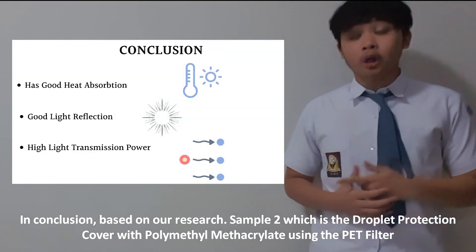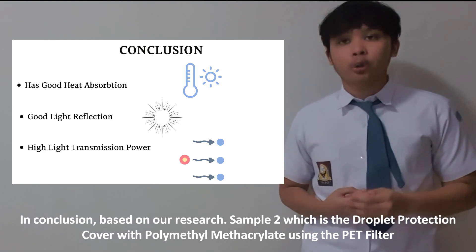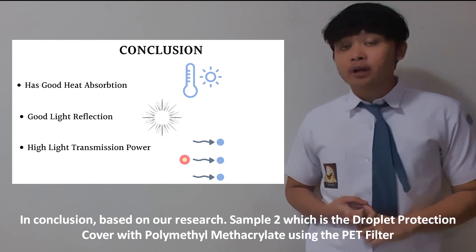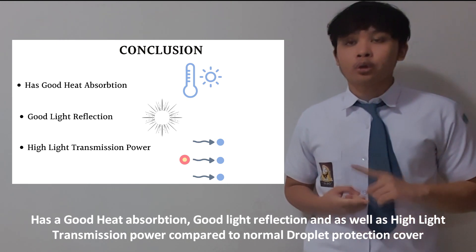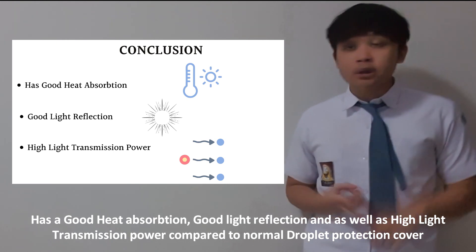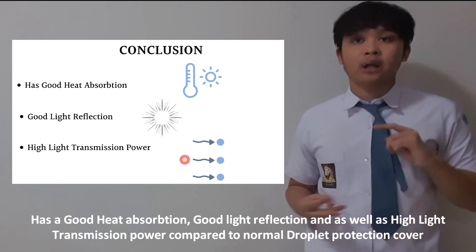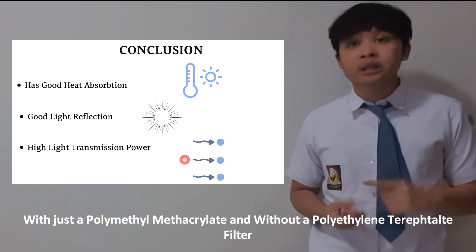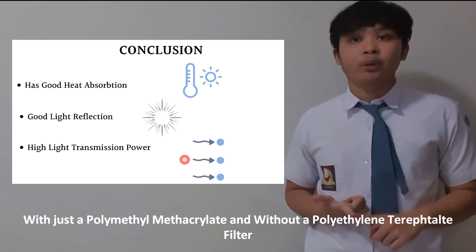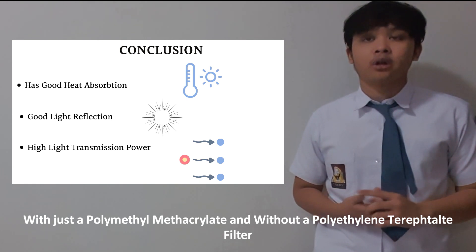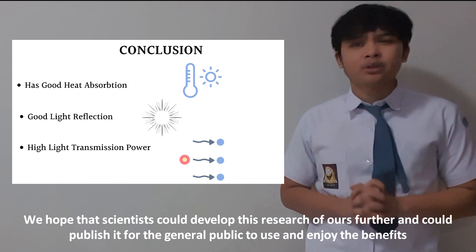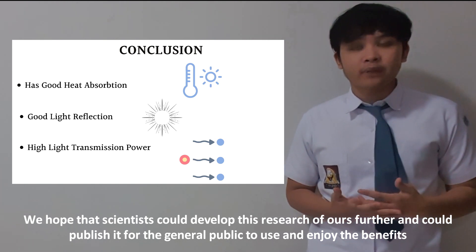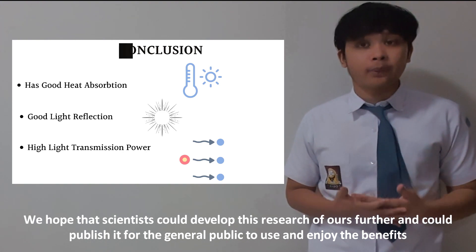In conclusion, based on our research, Sample 2 — the droplet protection cover with the polyethylene terephthalate (PET) filter — has good heat absorption, good light reflection, and high light transmission power compared to a normal droplet protection cover without the PET filter. We hope that scientists could develop this research further and publish it for the general public to use and enjoy the benefits.